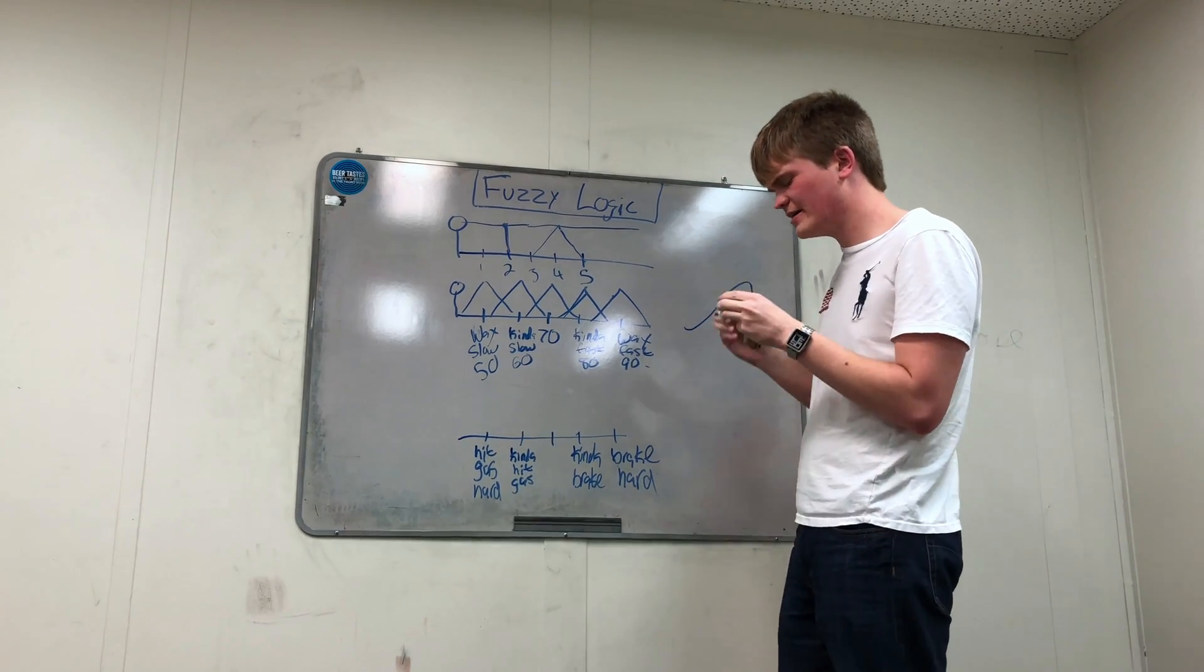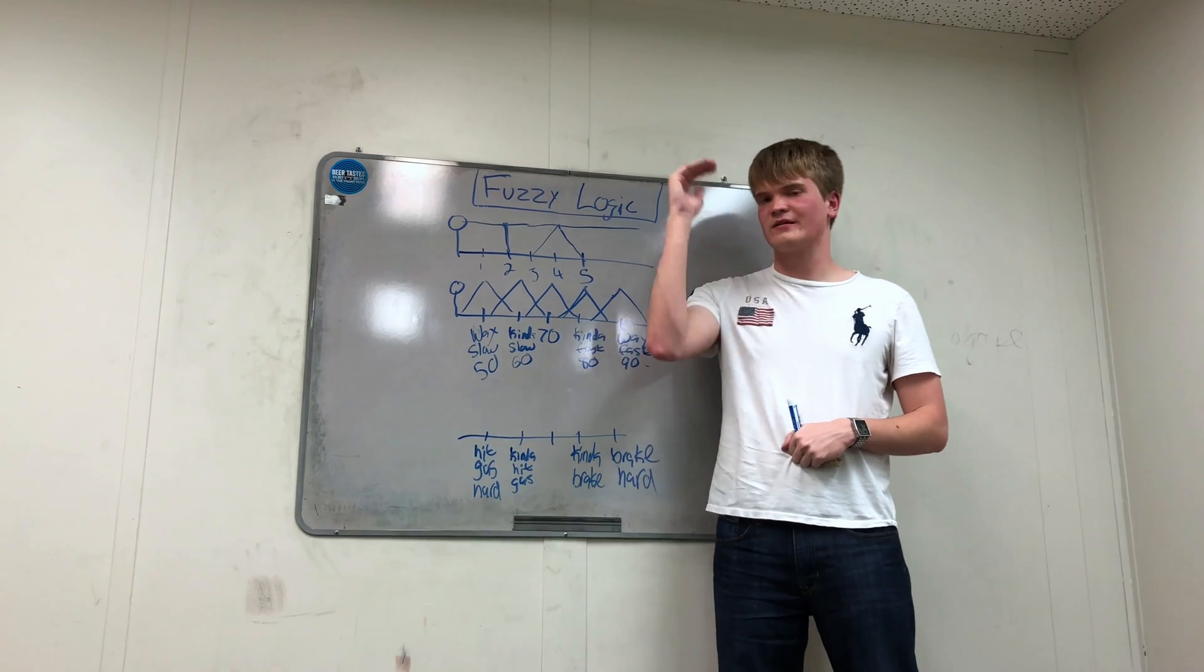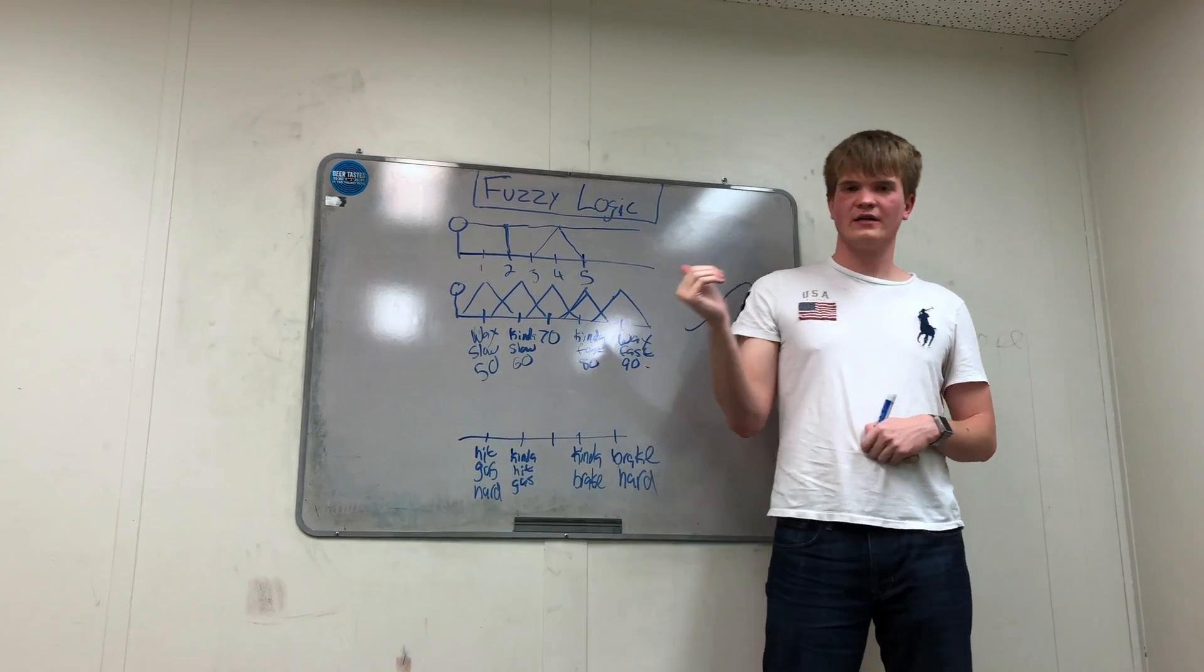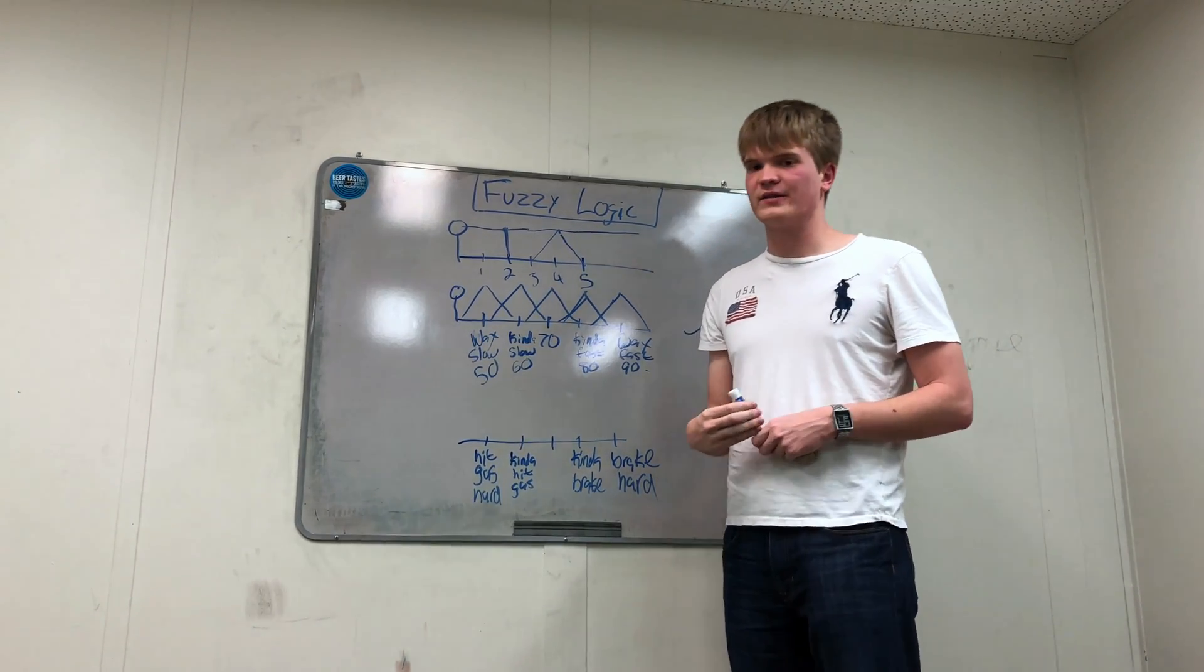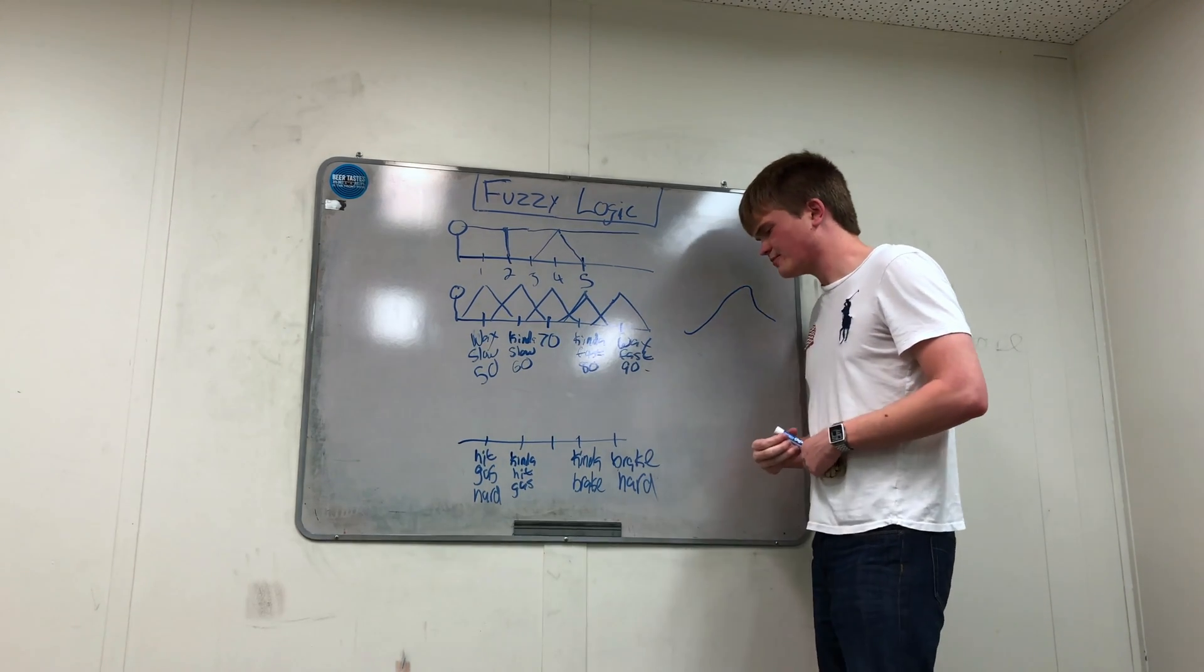So, why is fuzzy logic used in cruise controls? Why not just having finite values? Like if your car slows down a mile an hour, then you hit the brake one more newton.